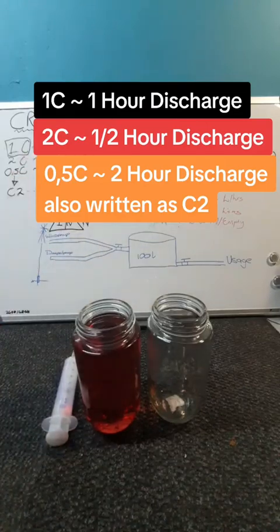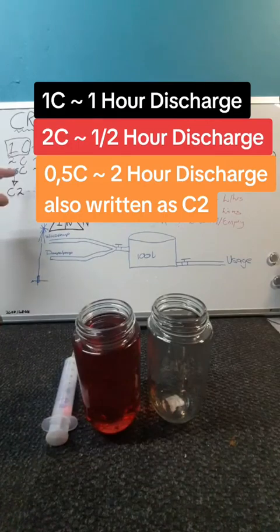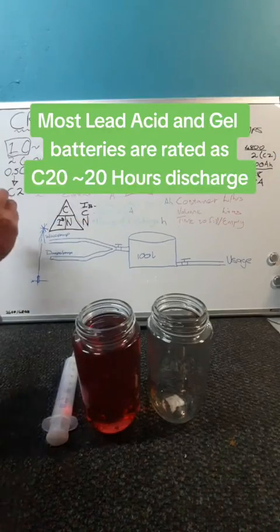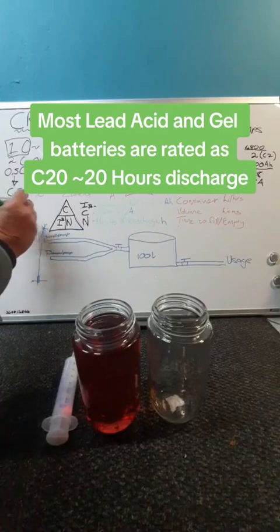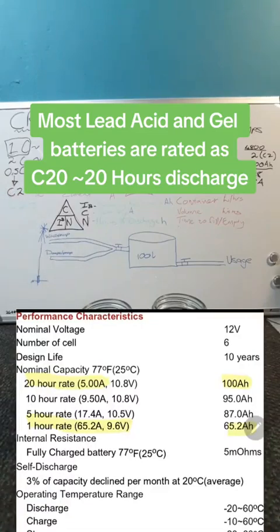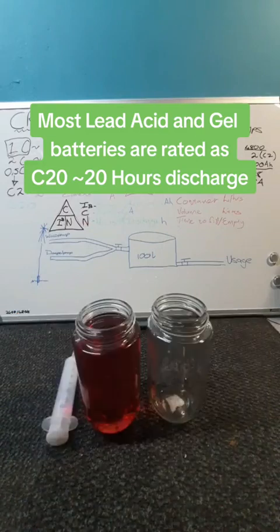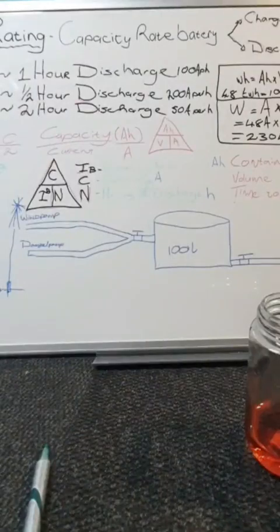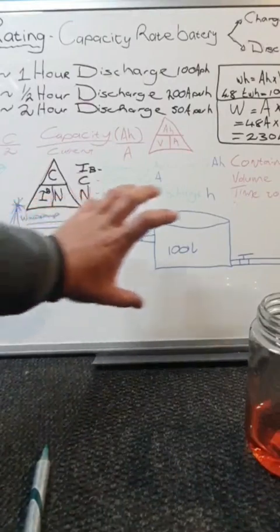Sometimes they will say 0.5C or they will say C2. But like a lead acid battery is basically C20, so that means a lead acid battery needs to charge for 20 hours and you need to discharge it in 20 hours. You can do it quicker but it will damage your batteries.